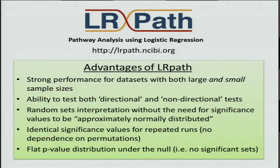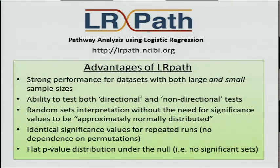Some advantages of LRPath are that it has strong performance for datasets with both large and small sample sizes, which is nice when integrating many datasets with various sample sizes. It has the ability to do both a directional test — taking into account the direction of changes, looking at up- and down-regulated genes or hyper- or hypomethylated concepts — or a non-directional test looking at what is overall differentially methylated or which gene sets have less differential methylation than expected by chance. LRPath also has a random sets interpretation, looking at whether the overall amount of differential methylation for a gene set is significantly more than you would see with random sets of genes from the experiment of the same size.